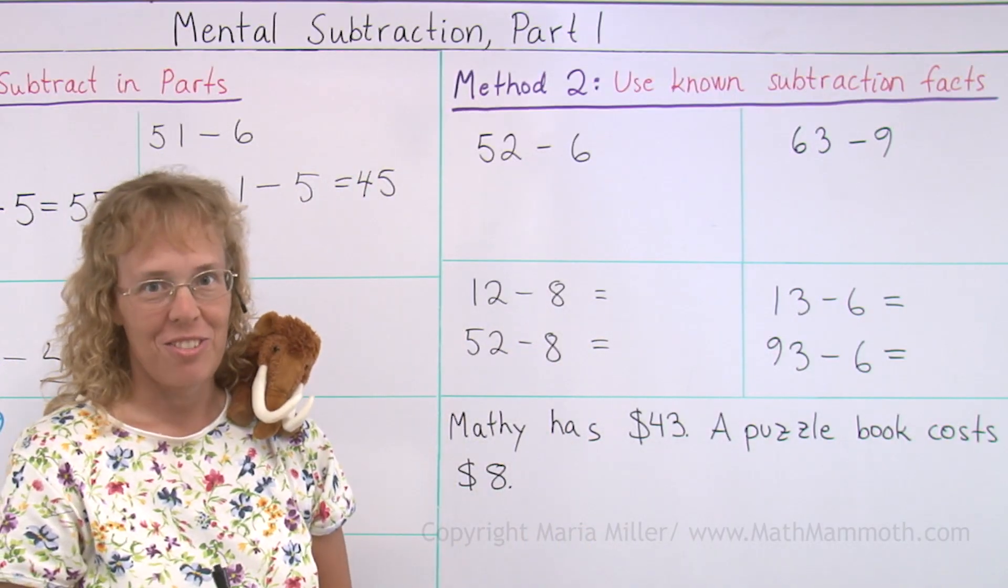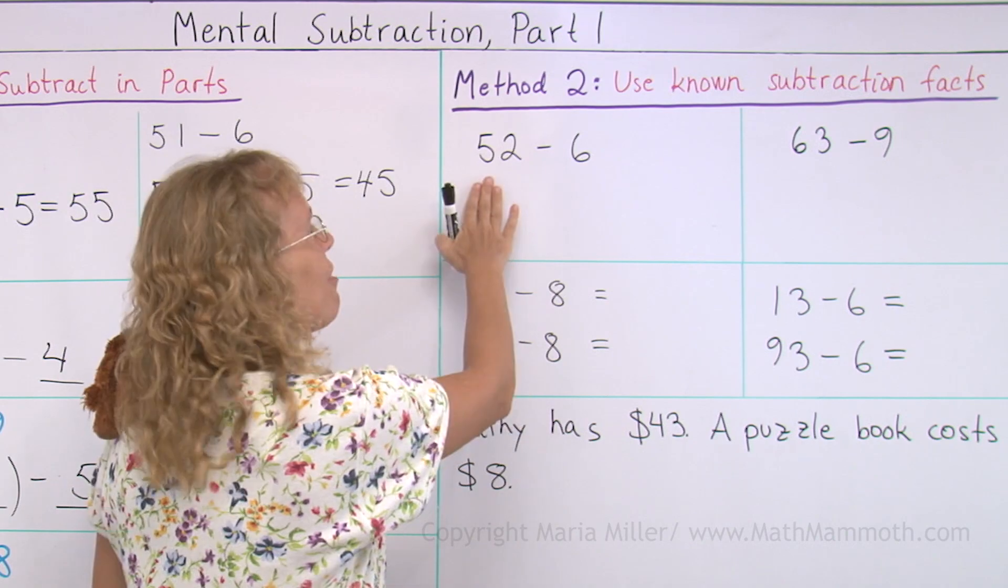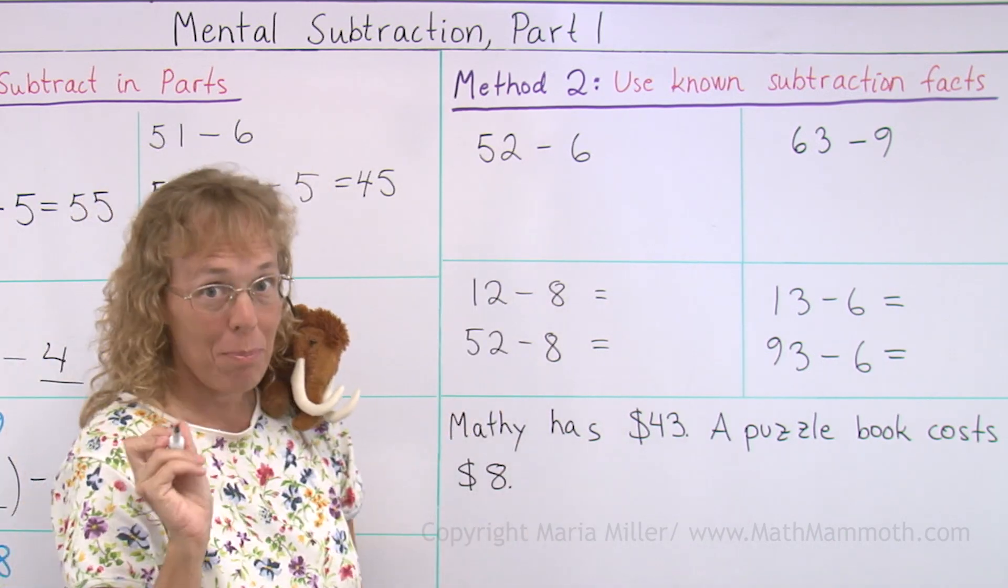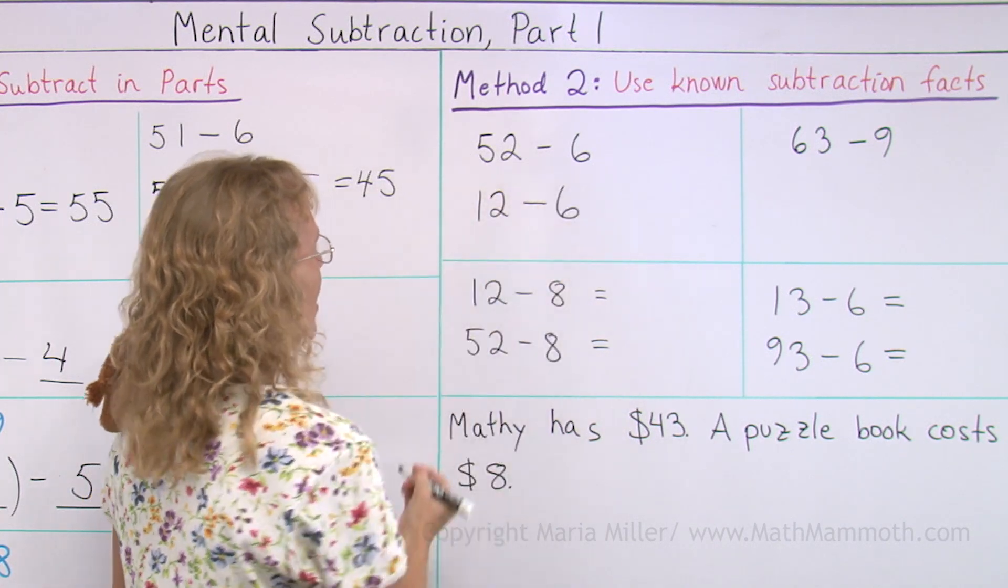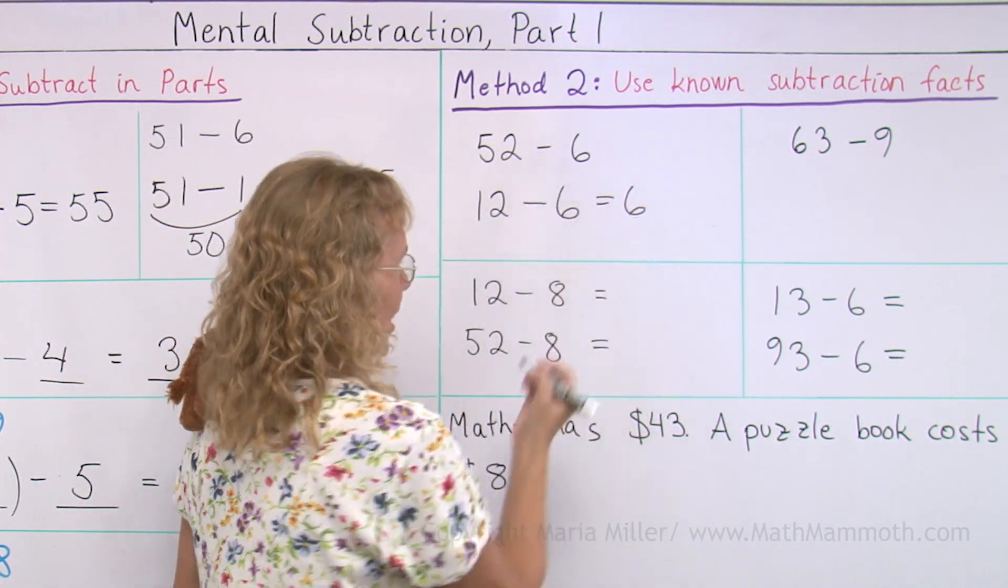Use known subtraction facts. Over here I have 52 minus 6. And I'm going to use a helping problem, which is 12 minus 6. And that I know the answer to. It is 6.